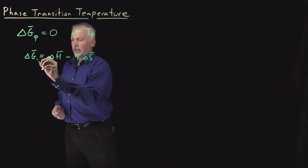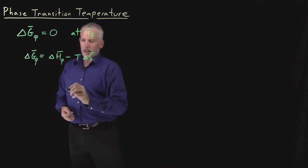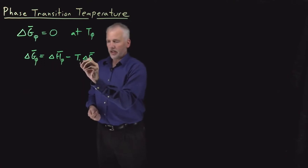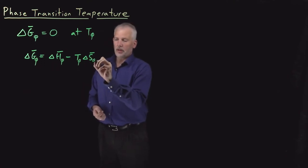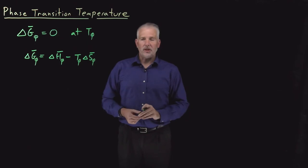If we're doing that at the phase transition, delta G of the phase transition is enthalpy change of the phase transition minus the temperature of the phase transition multiplied by the change in entropy when the phase transition happens.